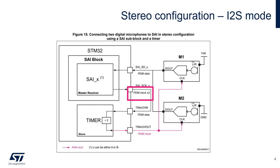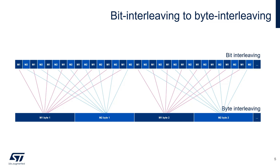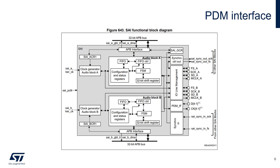Also, the software stage of bit interleaving to byte interleaving is the same as described for the I2S peripheral in the previous video. On some STM32, the SAI peripheral may include a PDM block specific for digital microphone acquisition, which gives some advantages when more than one microphone is needed.